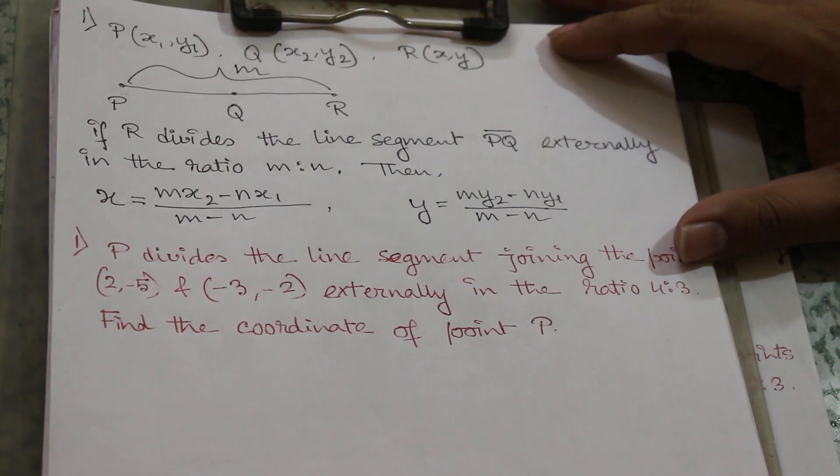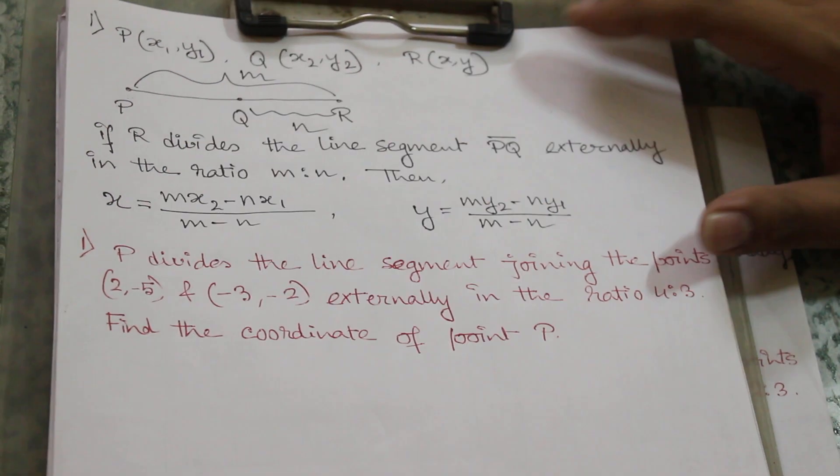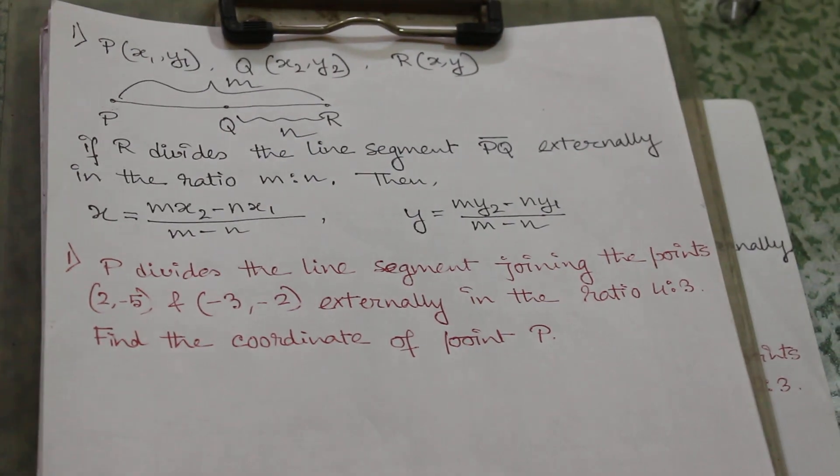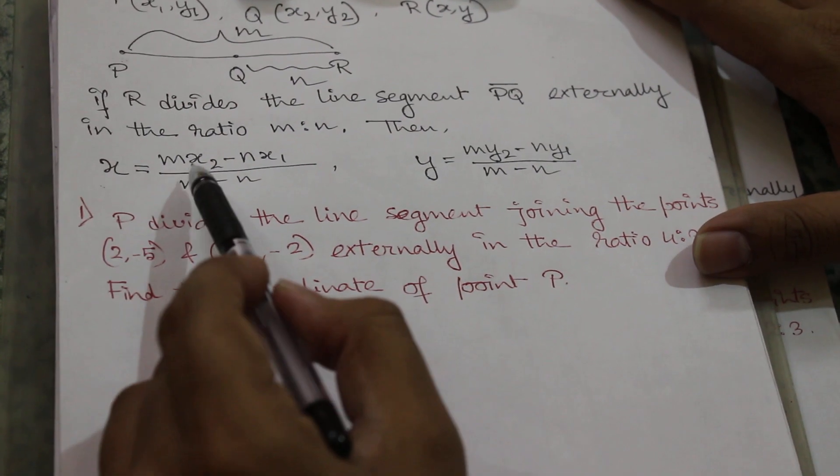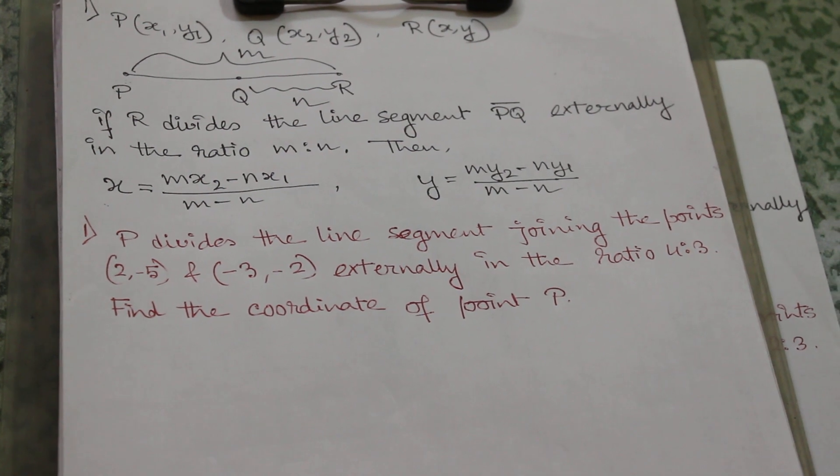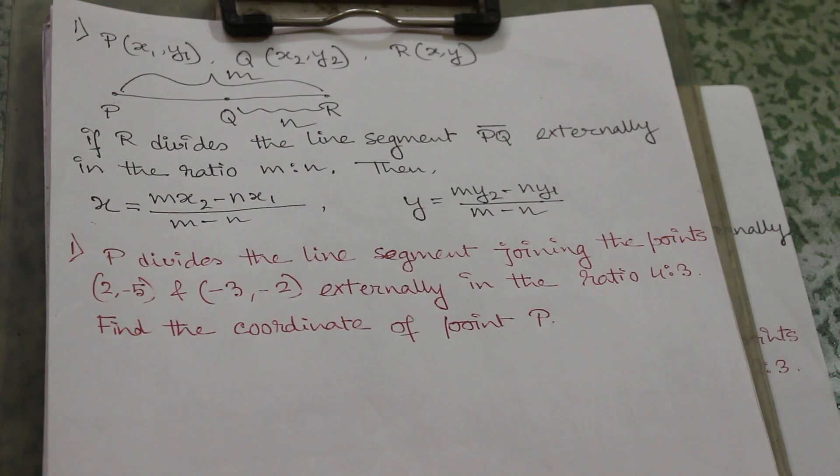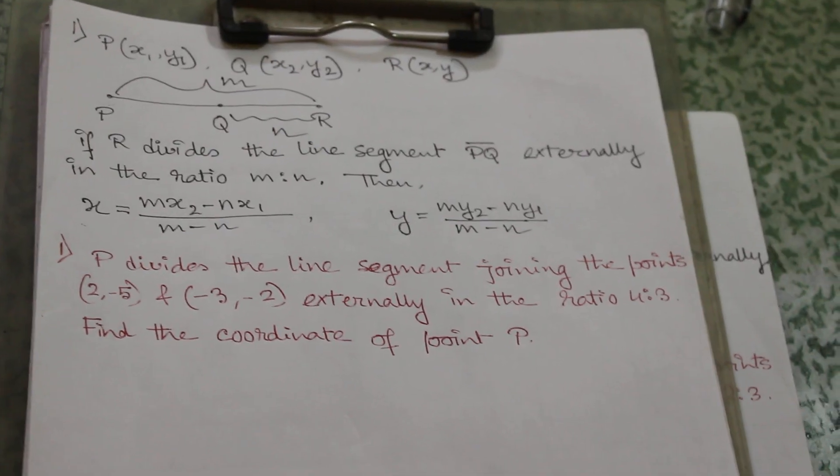Their ratio PR by QR will be equal to m by n. Now the coordinate of x will be equal to m·x2 minus n·x1 by m minus n, and y will be equal to m·y2 minus n·y1 by m minus n. We will solve this problem: P divides the line segment joining the points (2,-5) and (-3,-2) externally in the ratio 4:3. Find the coordinate of point P.